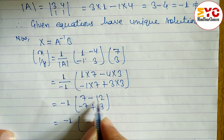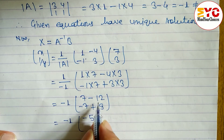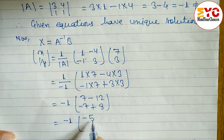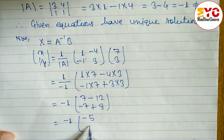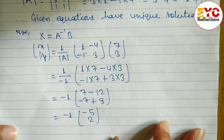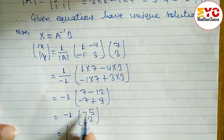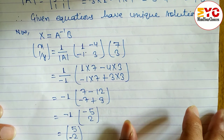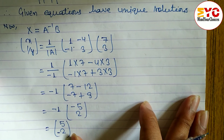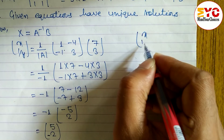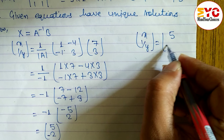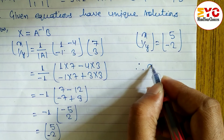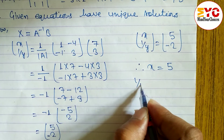Computing: 1 by -1 times [7 - 12; -7 + 9] = -1 times [-5; 2]. Then -1 times -5 gives 5, and -1 times 2 gives -2. So the result is [5; -2]. This means the column matrix [x; 1/y] equals [5; -2].